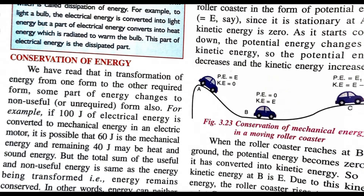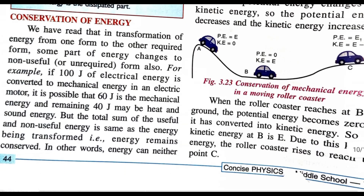We have read that during transformation of energy from one form to another, some part of the energy changes to a non-useful form as well. For example, if 100 joules of electrical energy is converted to mechanical energy in an electrical motor, it is possible that 60 joules will convert to mechanical energy and 40 joules will be converted to heat and sound energy. So the total is divided into a useful part and a non-useful part, and the total sum of useful and non-useful energy remains the same.